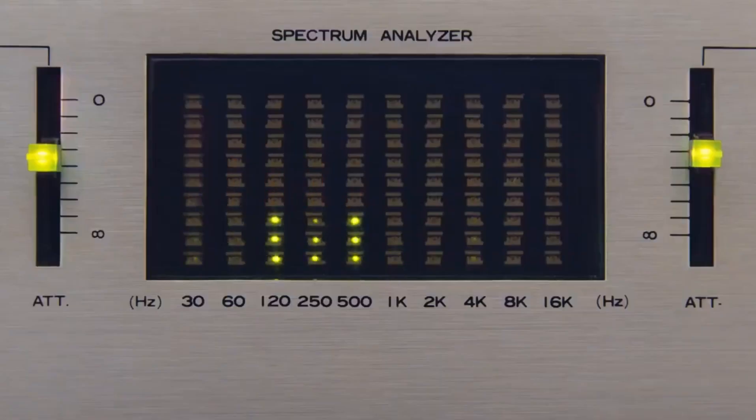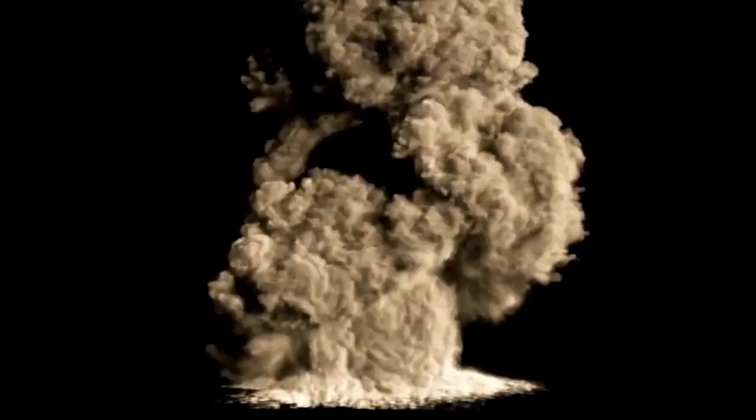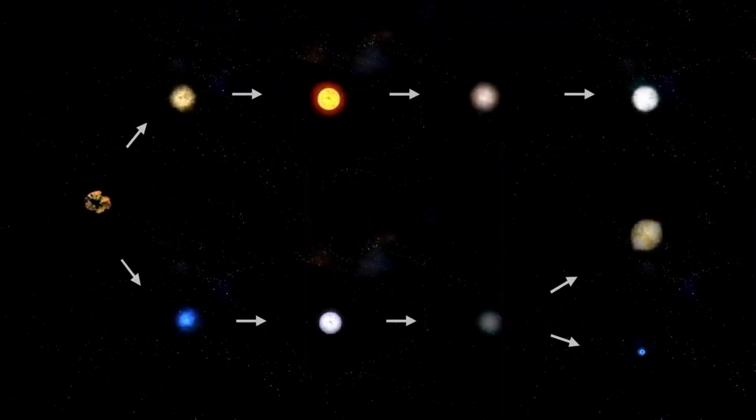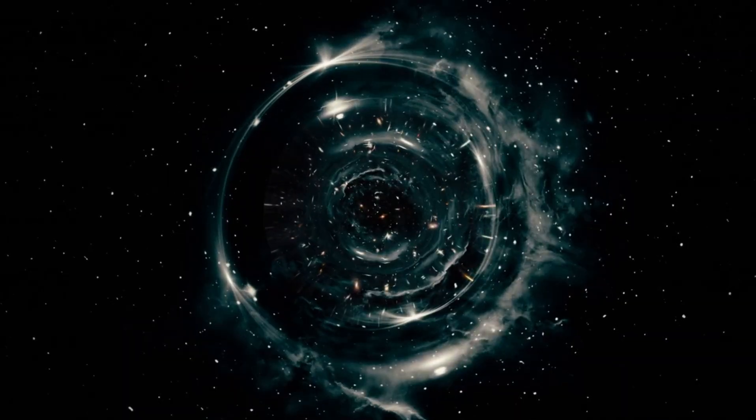Astrophysicist Andrea Dupree of the Harvard-Smithsonian Center for Astrophysics has been closely monitoring Betelgeuse's behavior. She notes that the star's brightness has been changing at an accelerated pace, with cycles lasting about 130 days instead of the usual 400 days. This unusual pattern began after the Great Dimming, when Betelgeuse ejected a significant amount of its outer atmosphere into space.